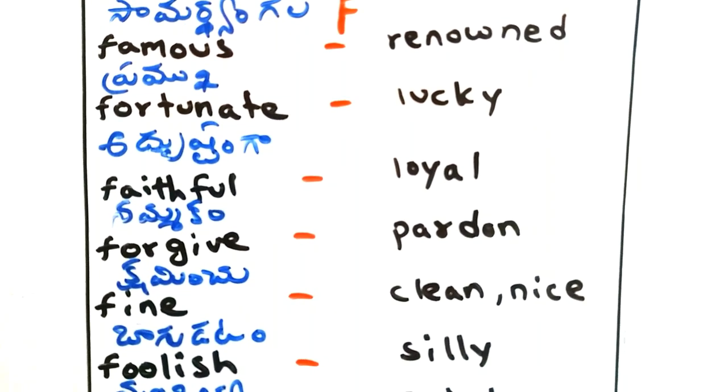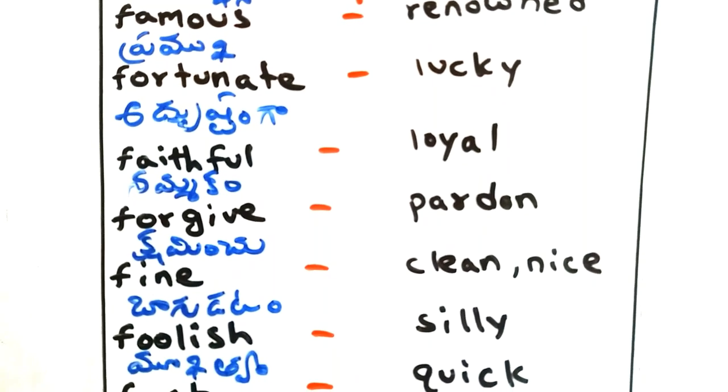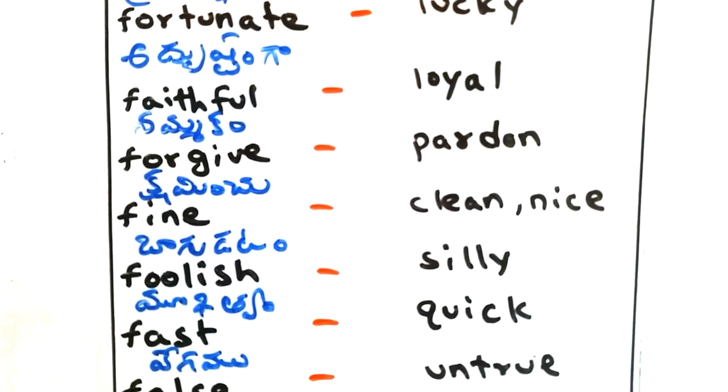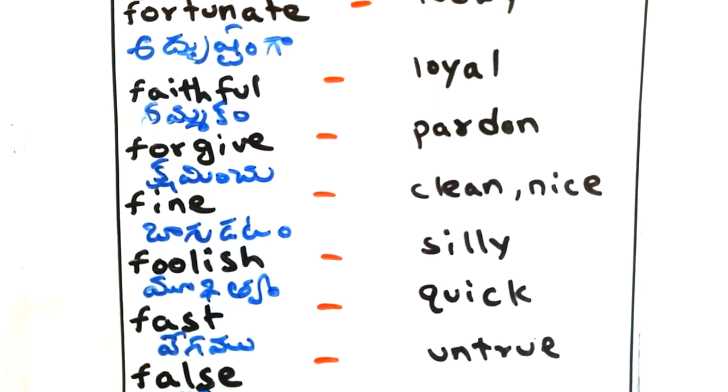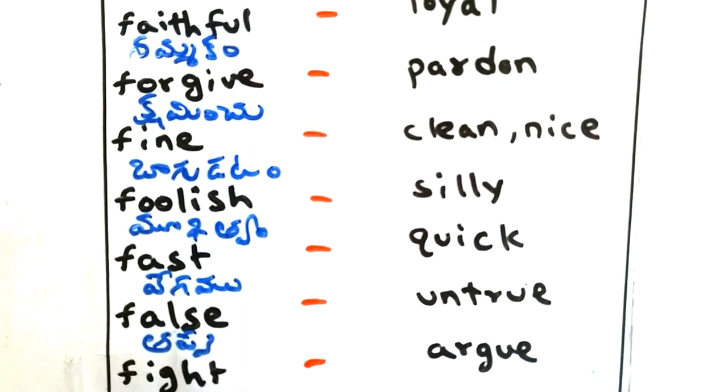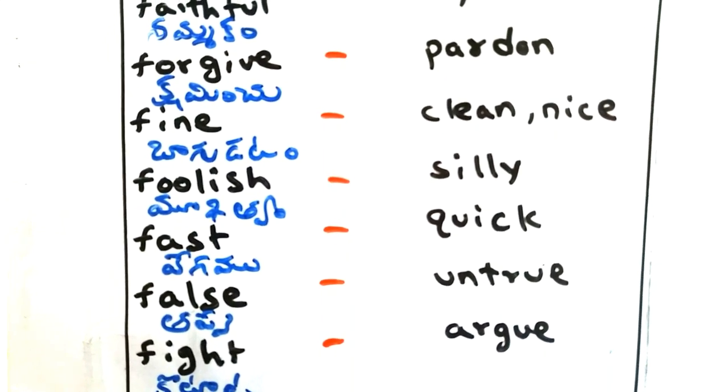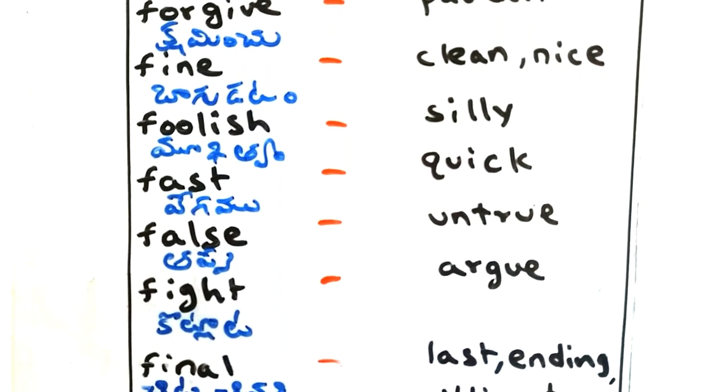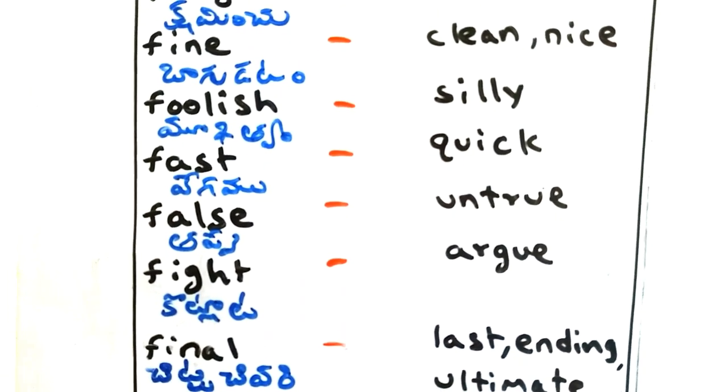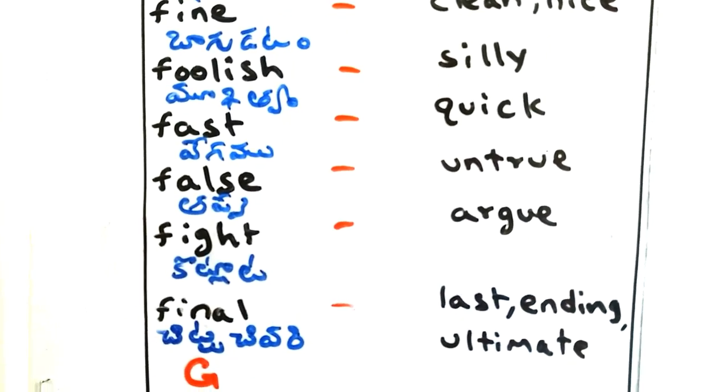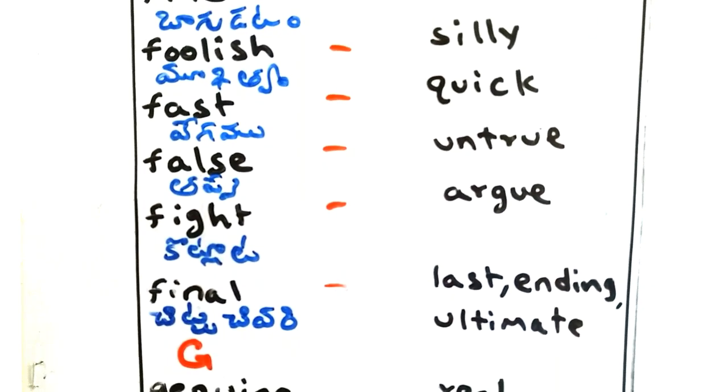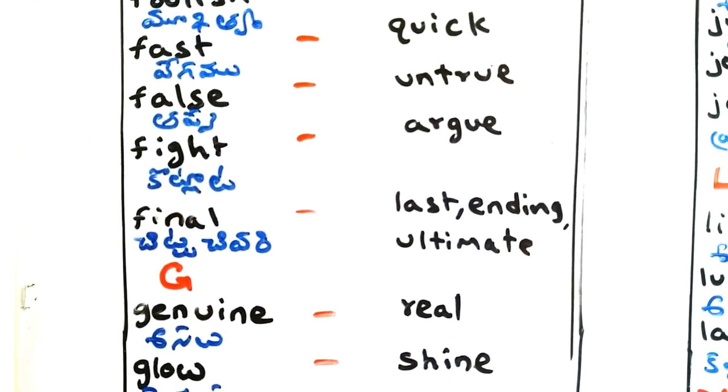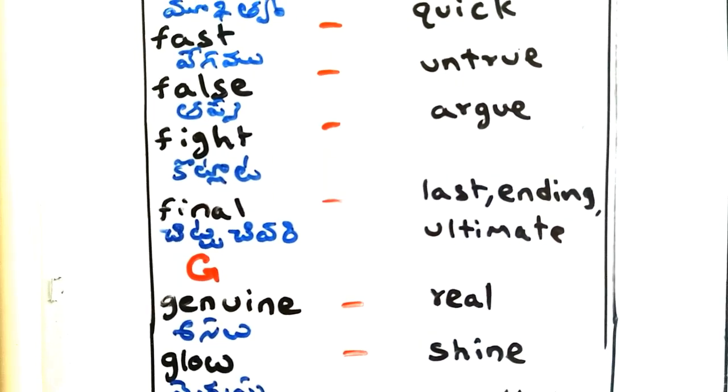Fortunate - adrushanga, lucky. Faithful - nammukam, loyal. Forgive - sheminchu, pardon. Fine - bhagunutam, clean, nice. Foolish - morkhanga, silly. Fast - vekam, quick. False - tappu, untrue. Fight - kotlaata, argue. Final - chittasivari, last, ending, ultimate.